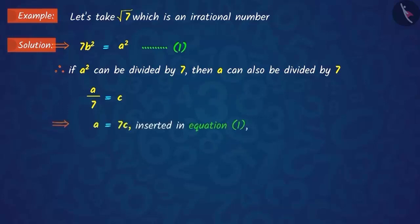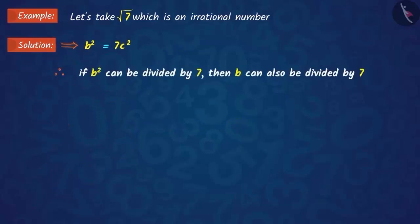Putting the value of a in equation 1 and solving, we get b² equals 7c². This shows that 7 divides b². Then, 7 will also divide b.